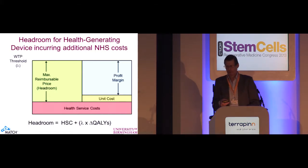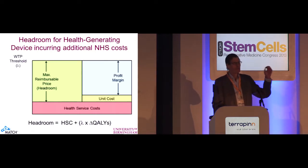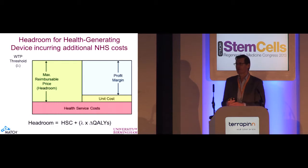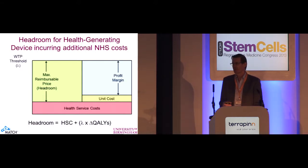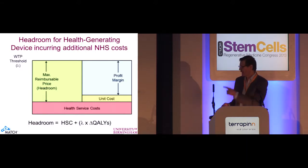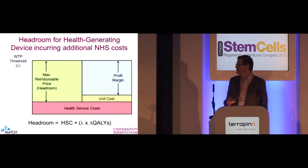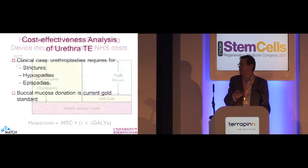If you remember this equation: it's the health service cost plus lambda — which is what you're prepared to pay for a unit of health benefit in your economy, I'm told it's about $45,000 in terms of actually observed behaviour in the United States — multiplied by the number of quality-adjusted life years that you gain. There should be a minus sign in front of the health service cost, which becomes positive if the health service costs are saving. So that's the headroom. I'll give you now a little example of a back-of-the-envelope calculation on the headroom.